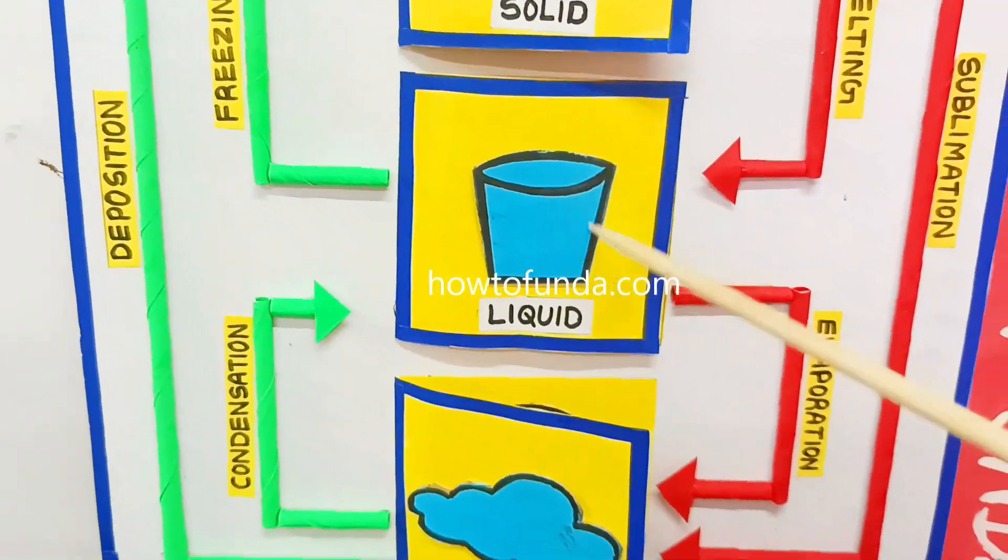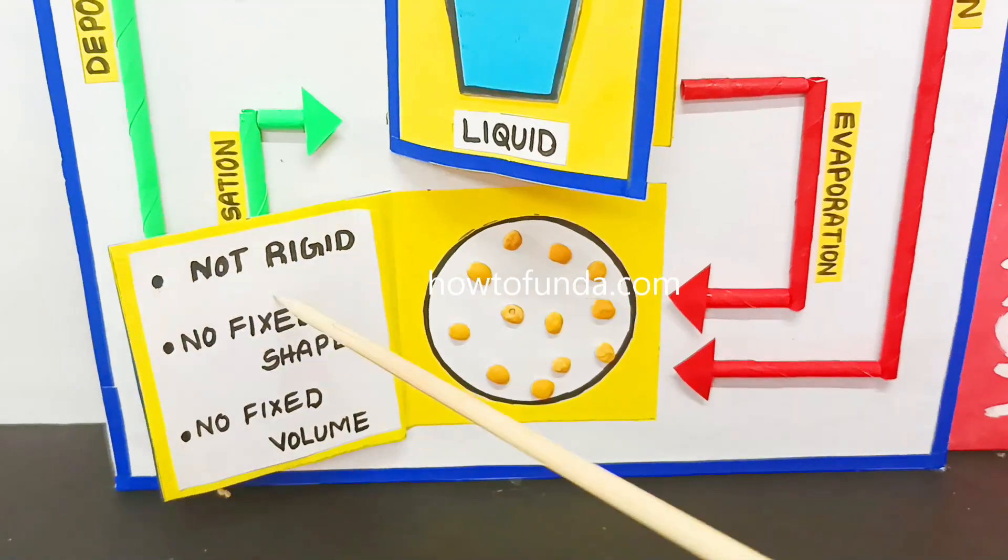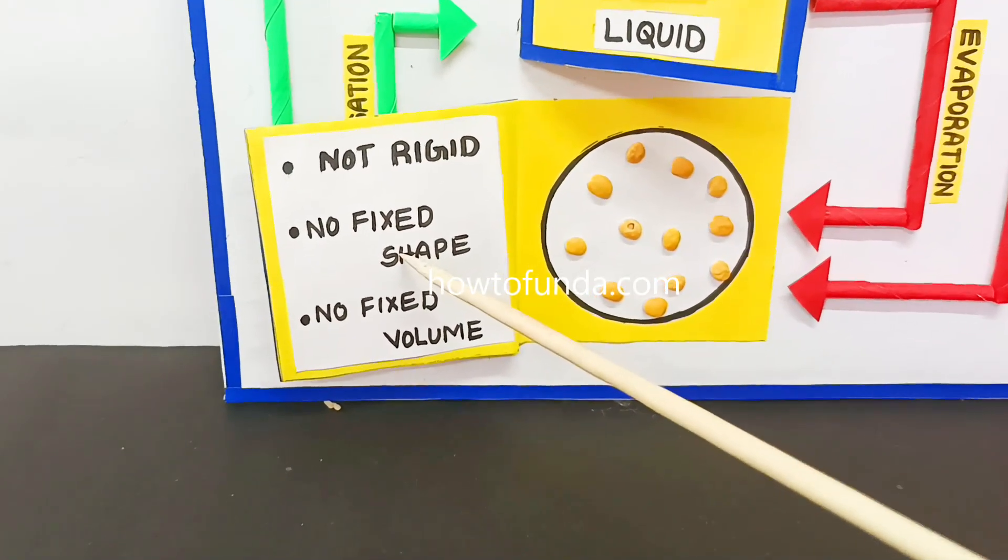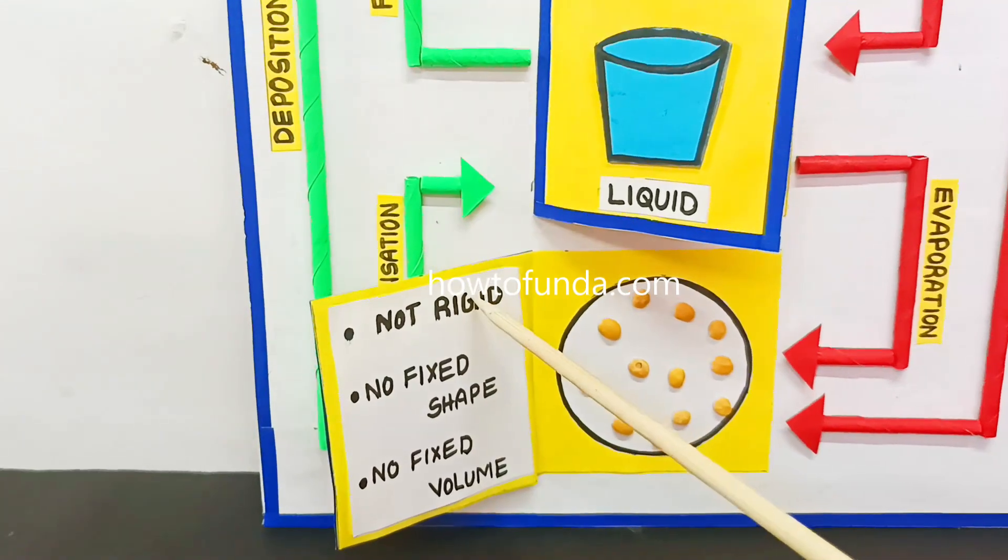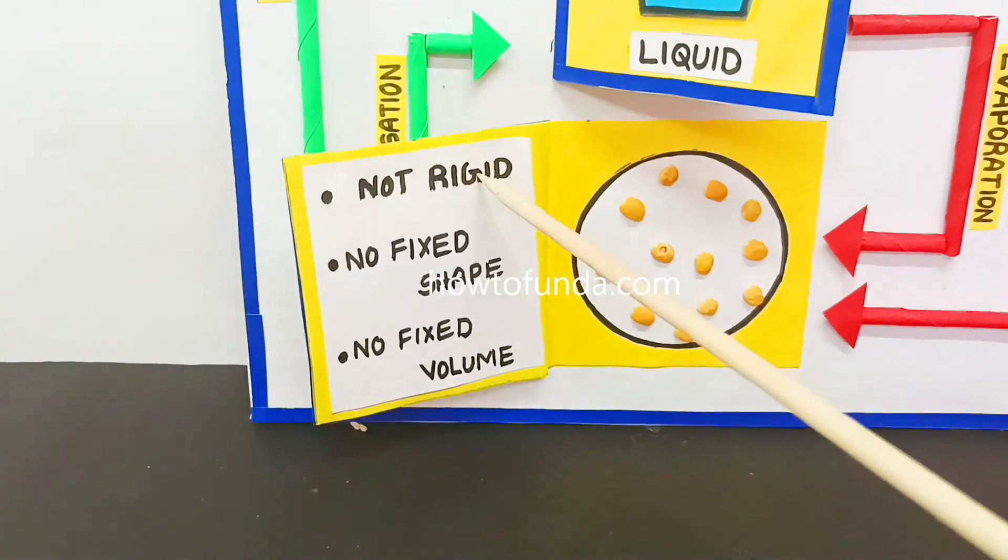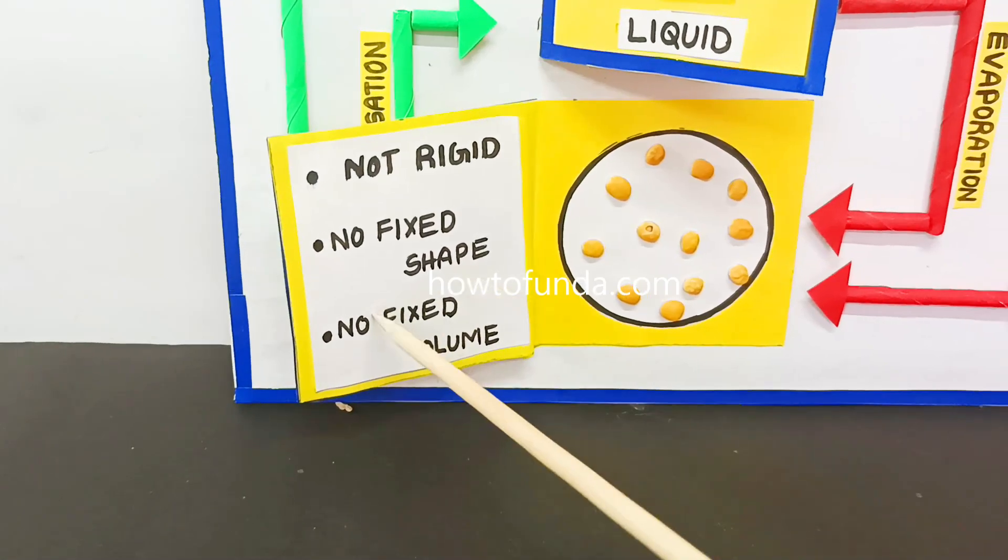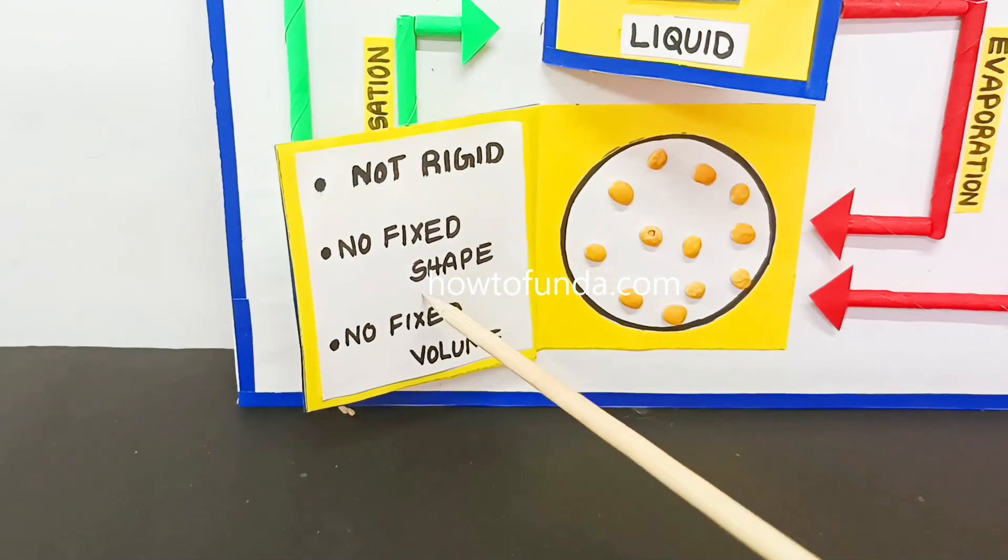Now when it comes to gaseous state, the example for the gaseous form is water vapor. In the water vapor, it's not rigid as well as no fixed shape and no fixed volume. These are the properties of gas.